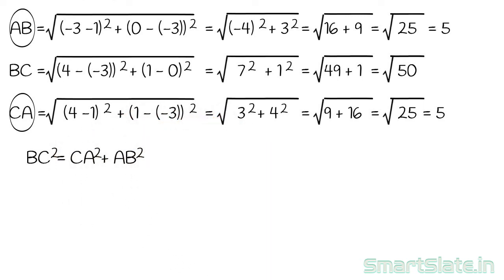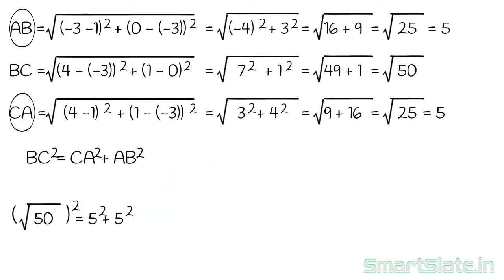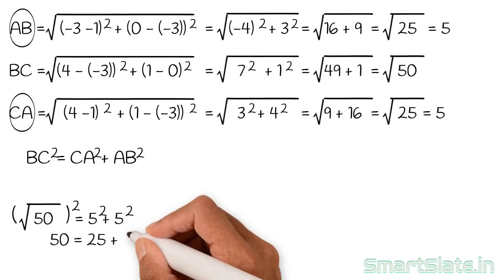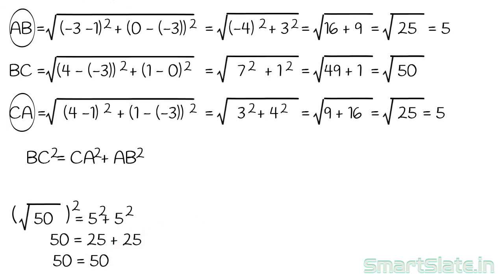Replace AB, AC and BC with their respective values. It is (square root of 50) squared equal to 5 squared plus 5 squared. Square root of 50 squared is 50. 5 squared plus 5 squared is 25 plus 25, which is 50. Since we have proved that the square of the longest side equals the sum of the squares of the other two sides, the given triangle is a right-angled triangle.